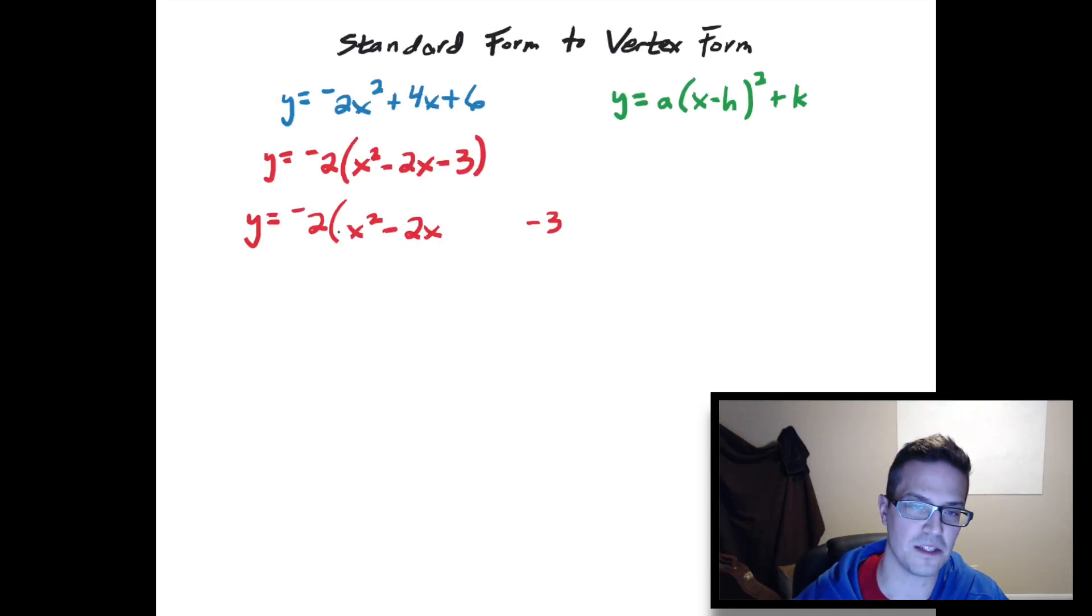Now in order to make this part right here a perfect square, I need to divide this b term, this negative 2, by 2 and then square it. So negative 2 divided by 2 would be negative 1, and then squared, that would be positive 1.